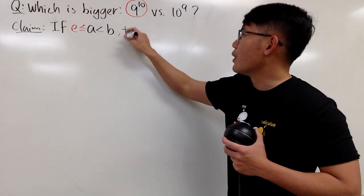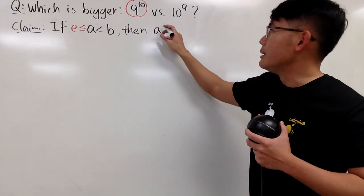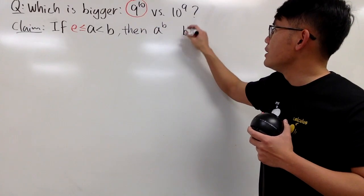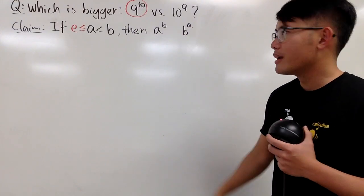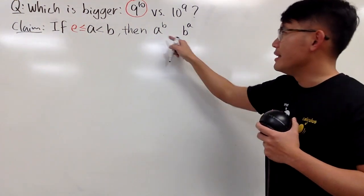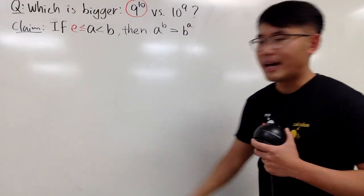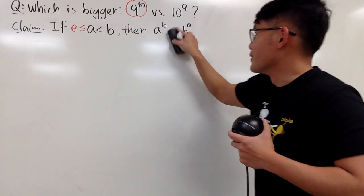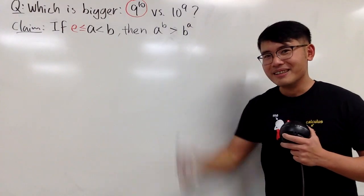But because B is bigger than A, well, B is not the same as e. A can be e, but B cannot be e. So that's my little assumption. If you have this, then I will tell you, whenever you have this, I will say A to the B's power versus B to the A's power, where I just switch the base and the exponent.